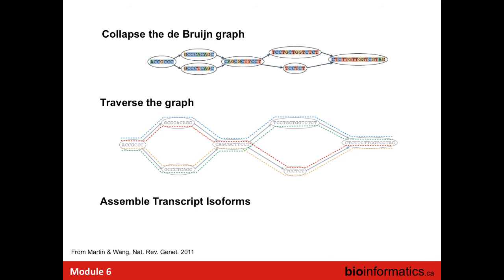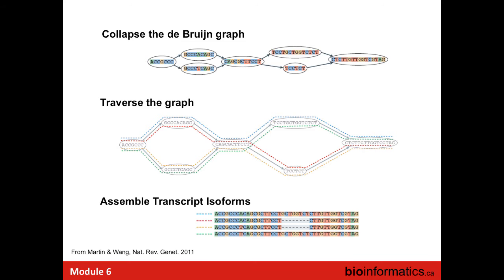Ideally the paths reported are those best supported by the underlying RNA-seq data. In this case we have four different paths, and traversing each gives a different sequence. When we align those sequences we can see differences — there's a polymorphism and also a large deletion.